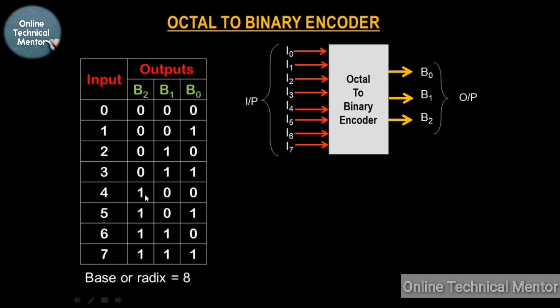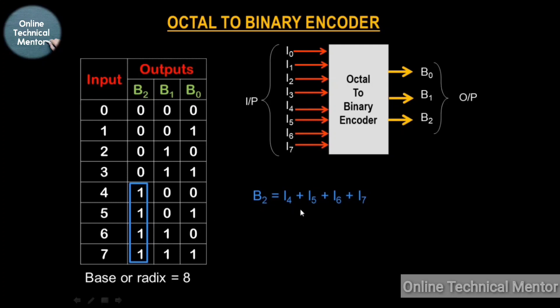Let's start with the B2 output. For the first four cases the output is low, and for the last four cases the output is high. So when the inputs are I4, I5, I6, and I7, B2 becomes high. You can write: B2 = I4 OR I5 OR I6 OR I7. That means when any one of the inputs I4, I5, I6, or I7 becomes high, B2 will become high.